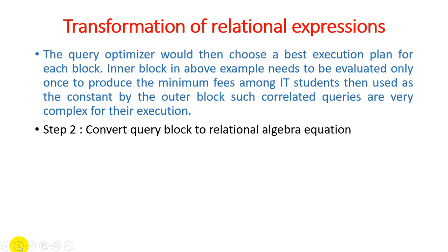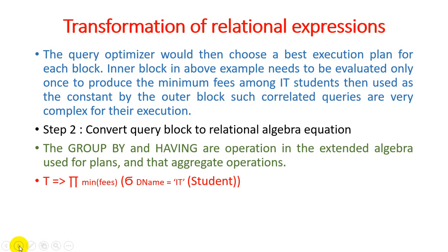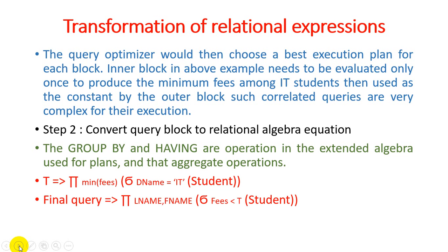Step two: convert your query block to relational algebra. The GROUP BY and HAVING operations in the extended algebra are used for plans and aggregate operations. In the previous example, MIN is an aggregate function — when converting a SQL query with aggregate functions to relational algebra, we use GROUP BY and HAVING operations. The first block selects minimum fees based on department name 'IT' from the student table. The final query selects l_name and f_name where fees are less than T, where T is the inner query result stored in variable T.